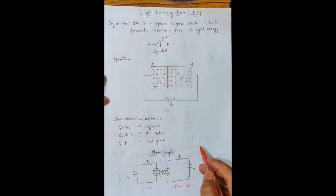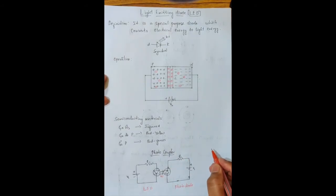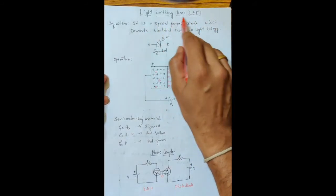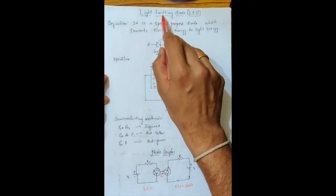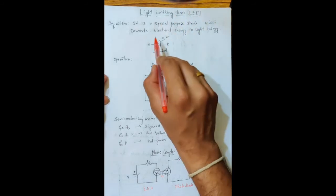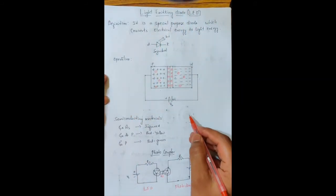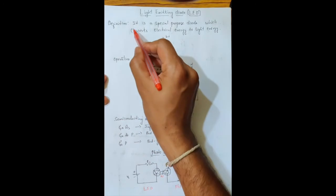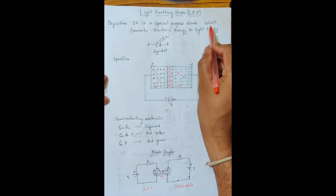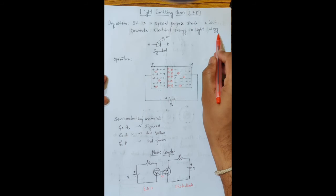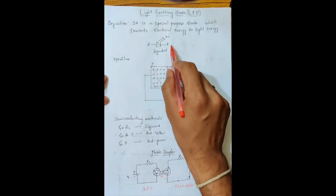Next we will see another special purpose diode — the Light Emitting Diode, also called LED. As the name suggests, it emits light, meaning it converts electrical energy to light energy. The definition: it is a special purpose diode which converts electrical energy to light energy. This is the symbol of the LED, which shows light being emitted.